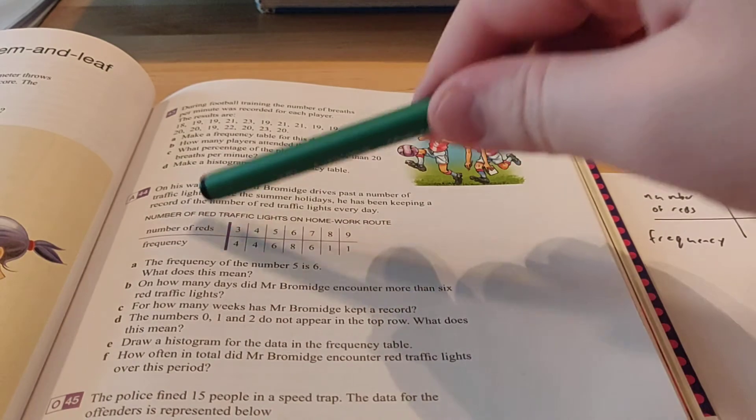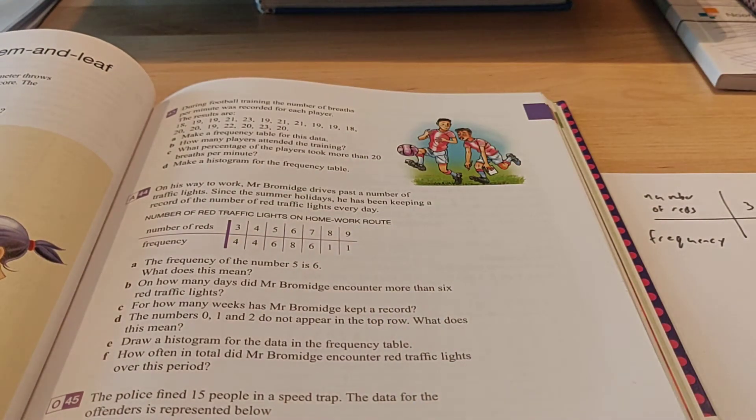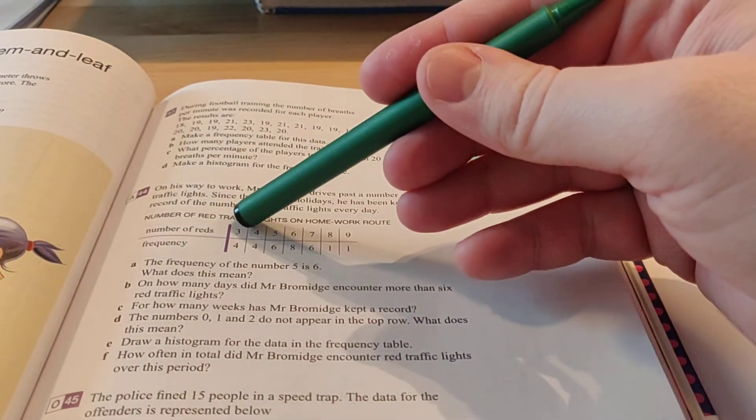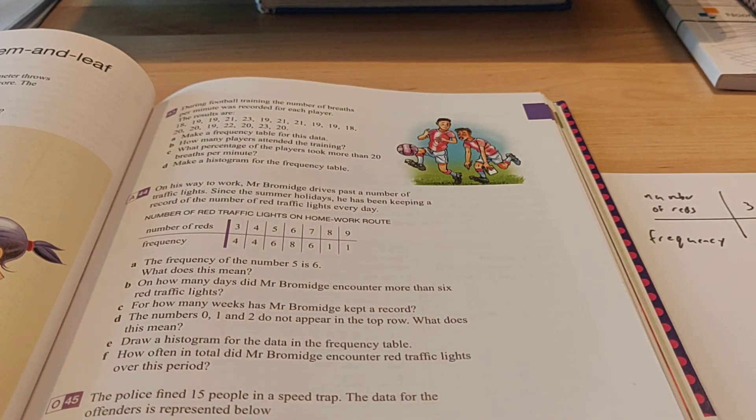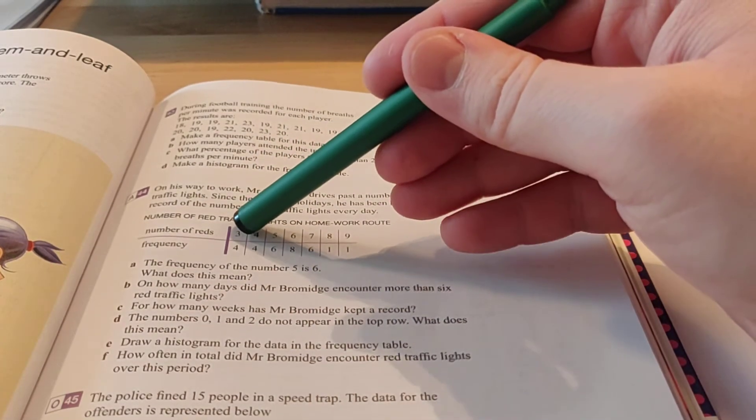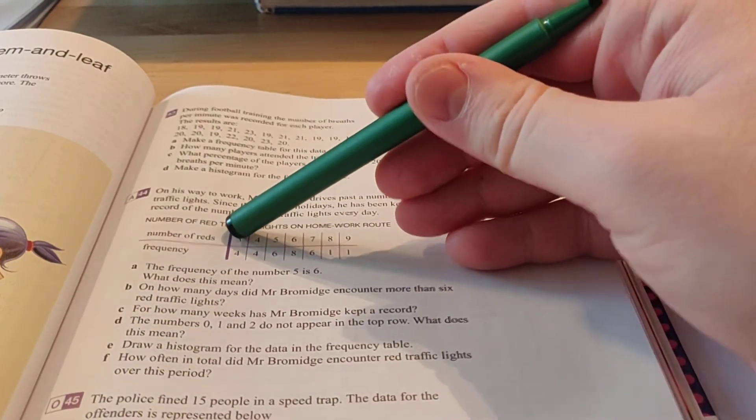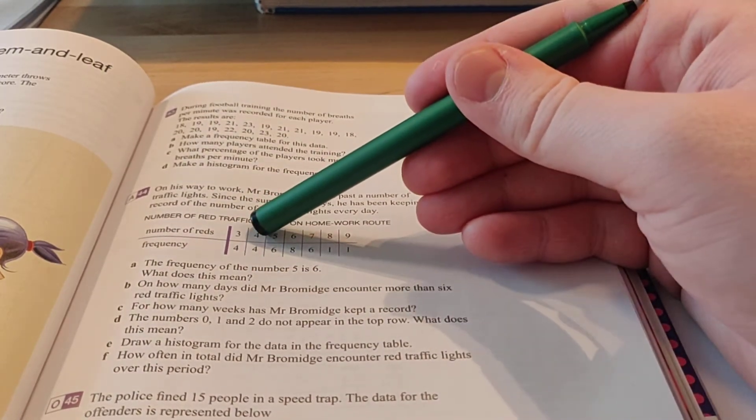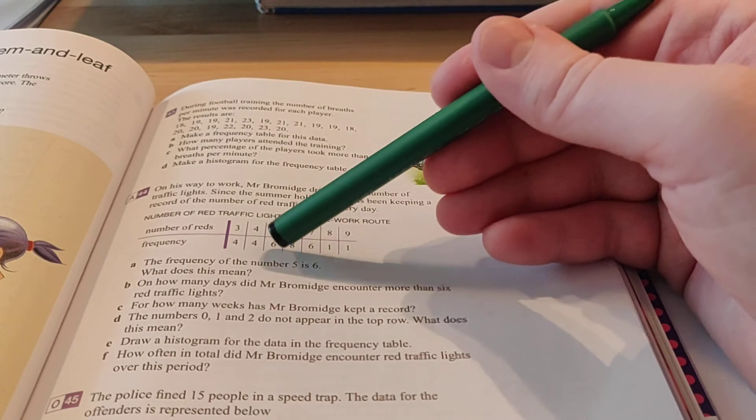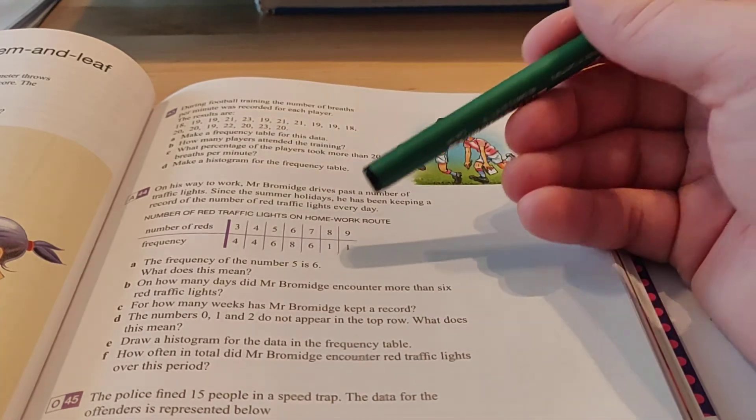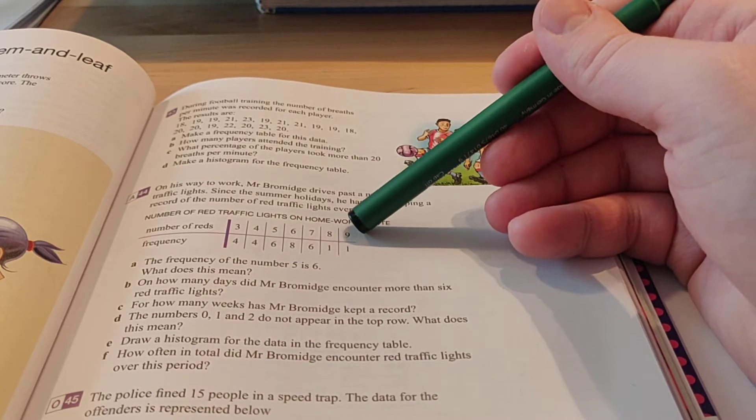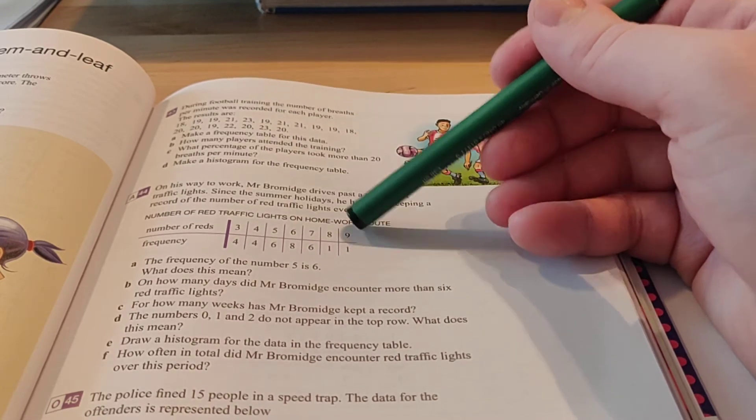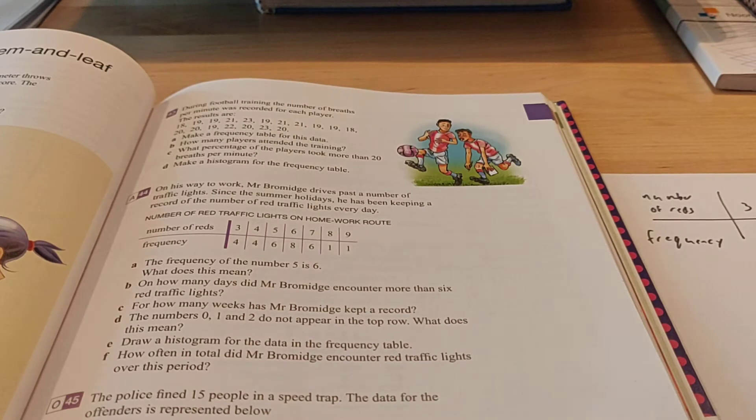Here you can see the frequency table. Now let me explain the frequency table to you. Here it says number of reds 3, frequency 4. So what that means is that there were 4 days where he had to wait for a red light 3 times. There were 4 days where he had 4 red lights, 6 days where he had 5 red lights, and for example, also 1 day where he had 9 red lights. So that day he was very unlucky and had to wait a lot. This is how this frequency table works.